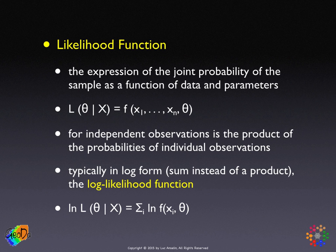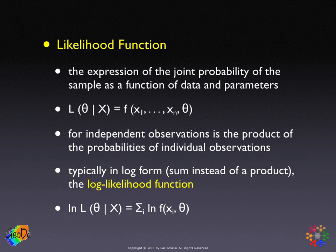For independent observations, we can simply take the product of all the joint probabilities. To avoid problems with very small values — since all these probabilities are multiplied together — and for mathematical convenience, the log likelihood function is typically used instead. The likelihood function for independent observations is the product of the individual probabilities; the log likelihood is the sum of the logs of the individual observations.